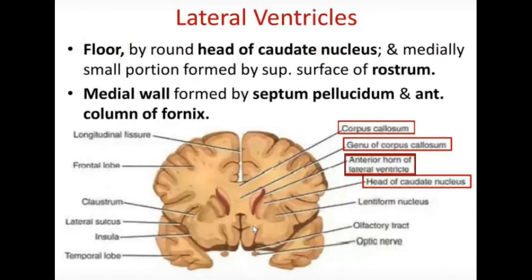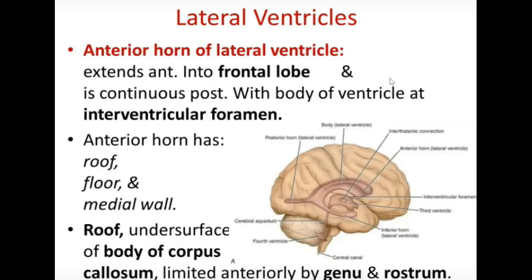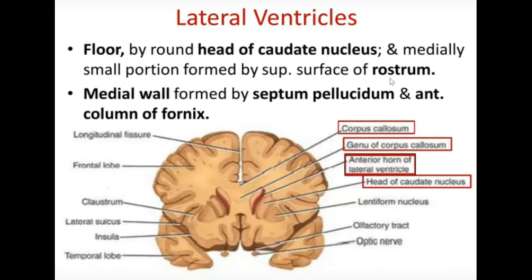To summarize: the medial wall of the anterior horn is formed by the septum pellucidum and the anterior column of the fornix. The floor is formed mainly by the head of the caudate nucleus along with a small portion of the rostrum of the corpus callosum. The roof is formed by the body of the corpus callosum. These are the three walls of the anterior horn.